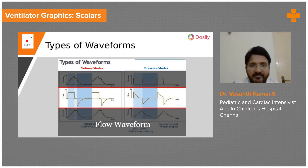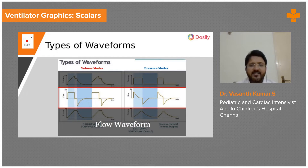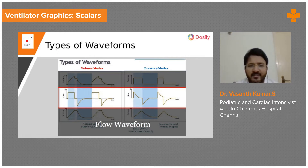I'll show you how to identify the scalars. There are three scalars. The first thing to identify is which scalar has a negative deflection. Here you can see this scalar has a positive deflection and a negative deflection. The only scalar which has a negative deflection is the flow-time scalar — none of the other scalars will have a negative deflection. So if you find a negative deflection in any scalar, you are sure it is the flow-time scalar.